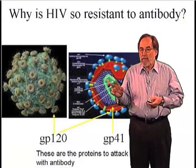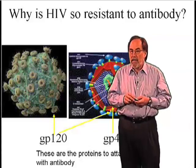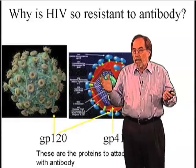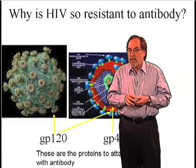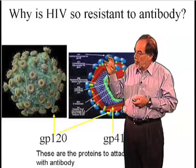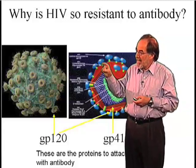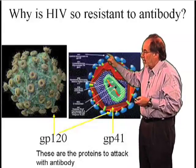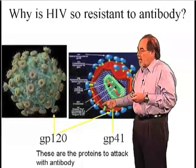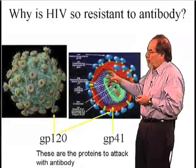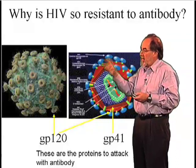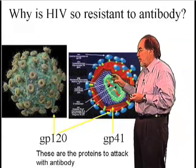Let me spend just a minute on why HIV is so resistant to antibodies, because basically almost all other viruses are sensitive. Antibodies have to attack a virus on the outside — they have to attack these spikes on the outside of the virus, and cover them up, or trigger them, or get rid of them — do something that will make it impossible for the virus to bind to an infected cell.